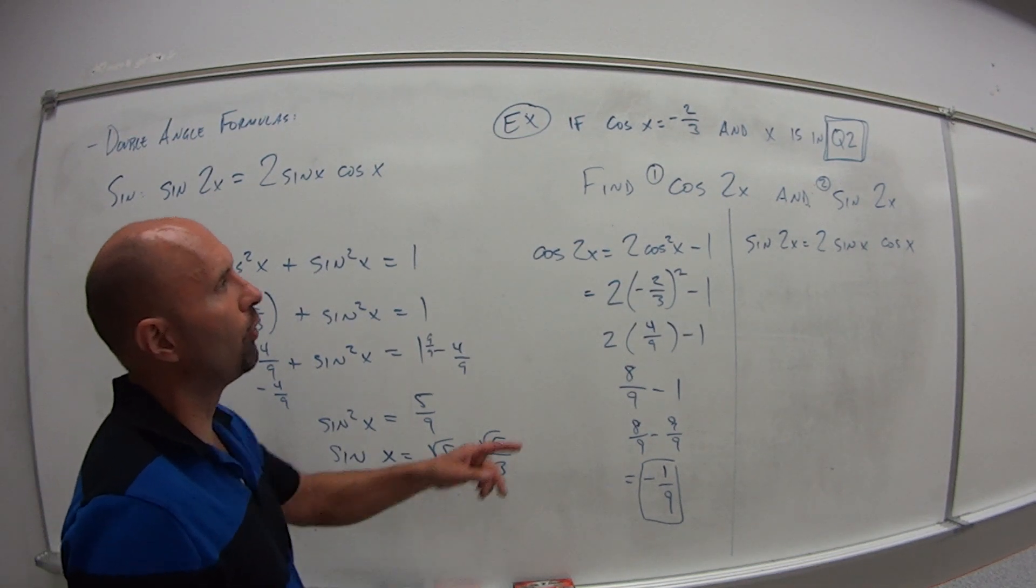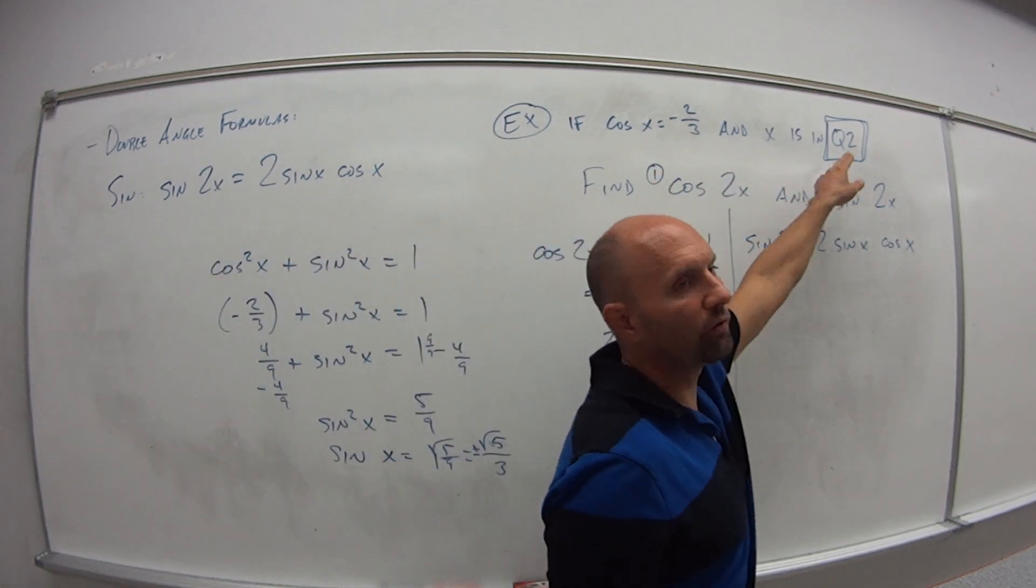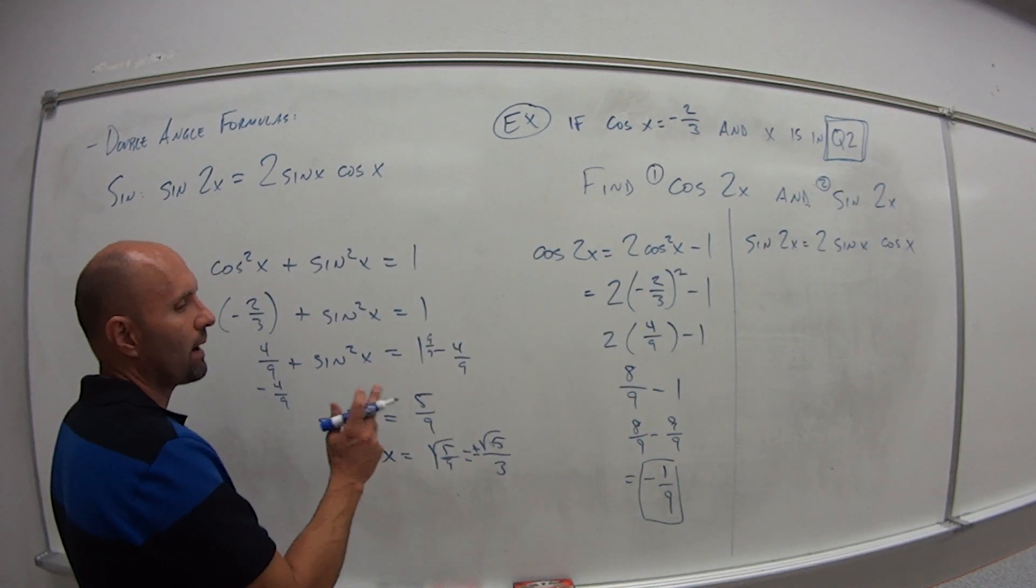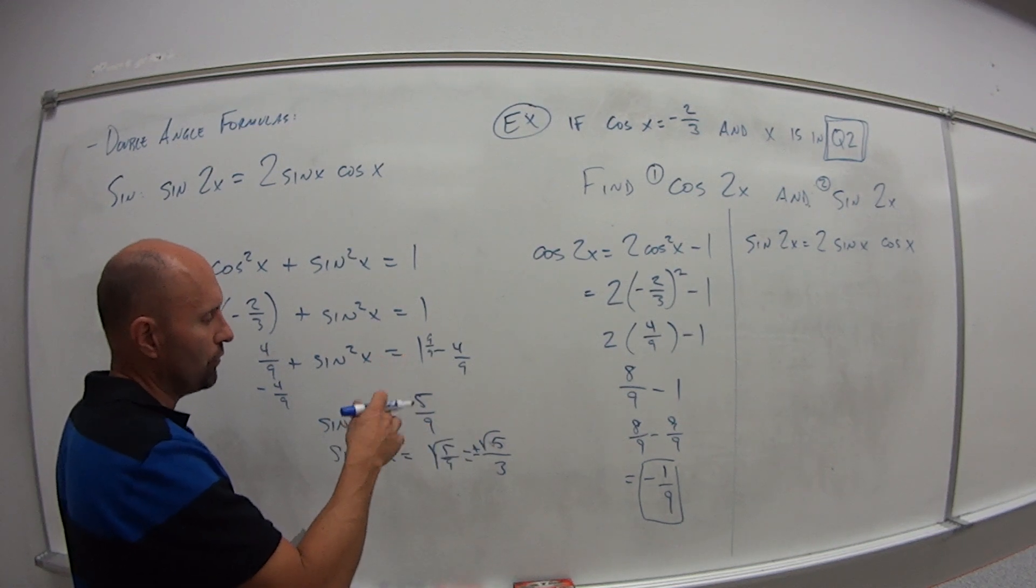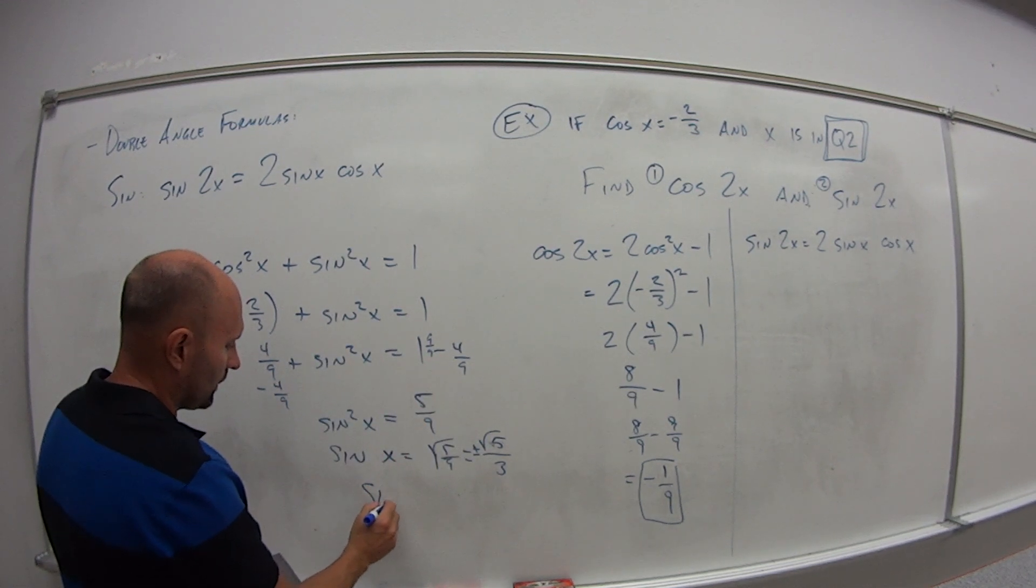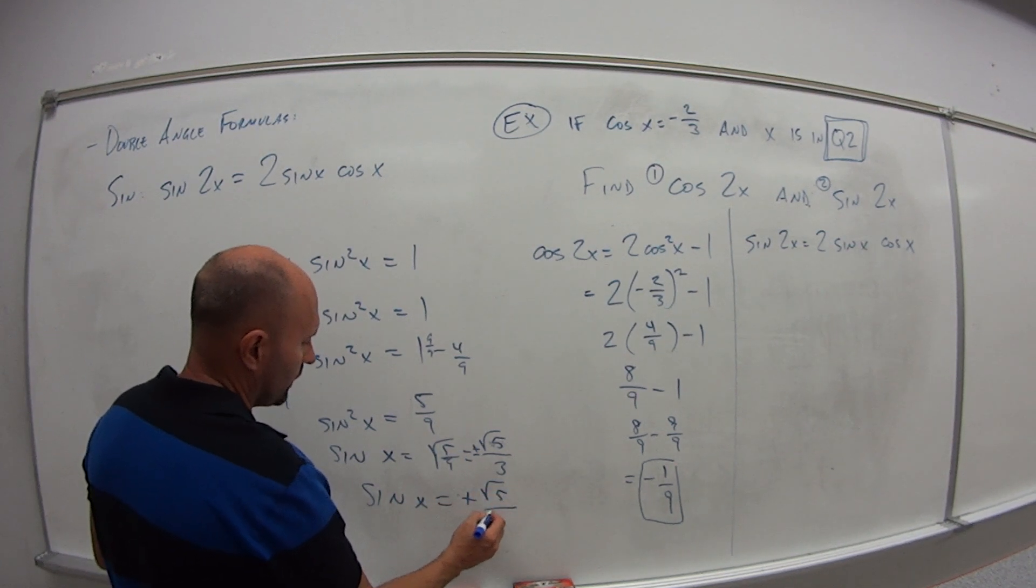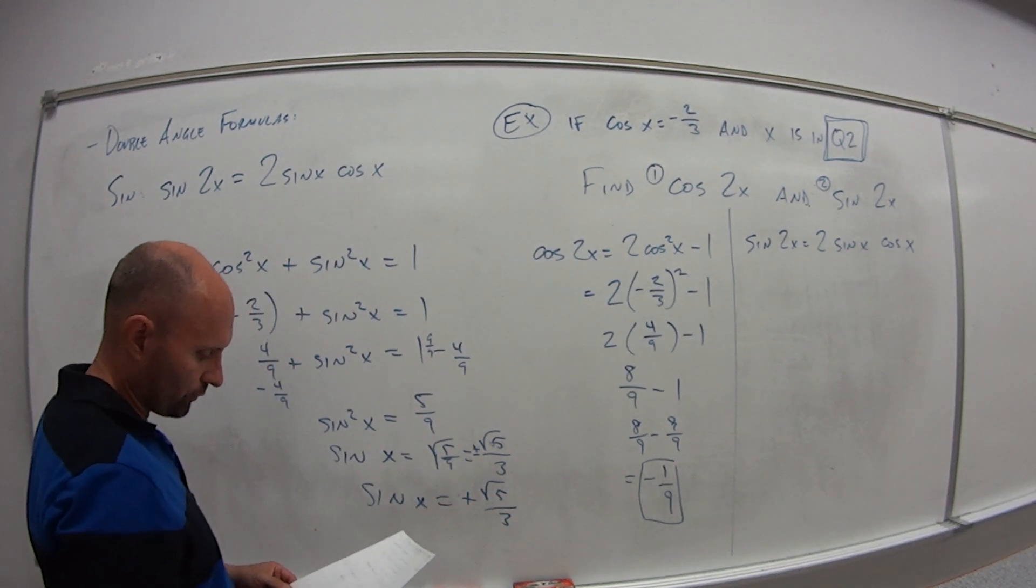Now it told me that x is in quadrant 2. So if that's the case, is sine of x positive or negative in quadrant 2? It's positive. So the value for sine of x that I want to use is plus square root of 5 over 3.